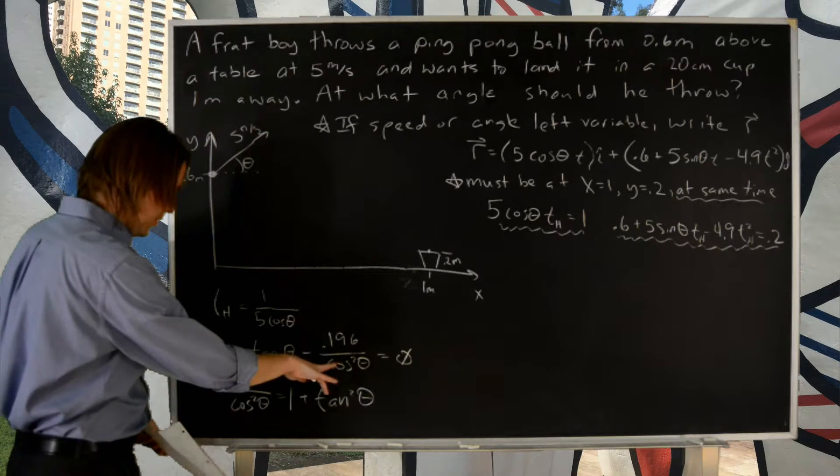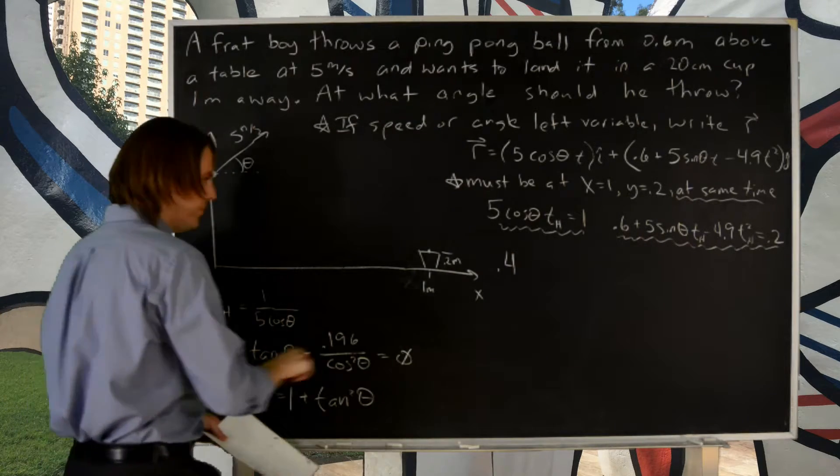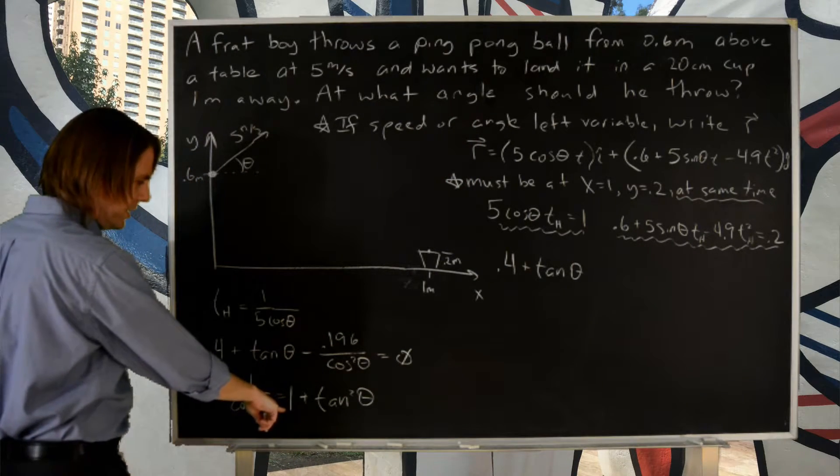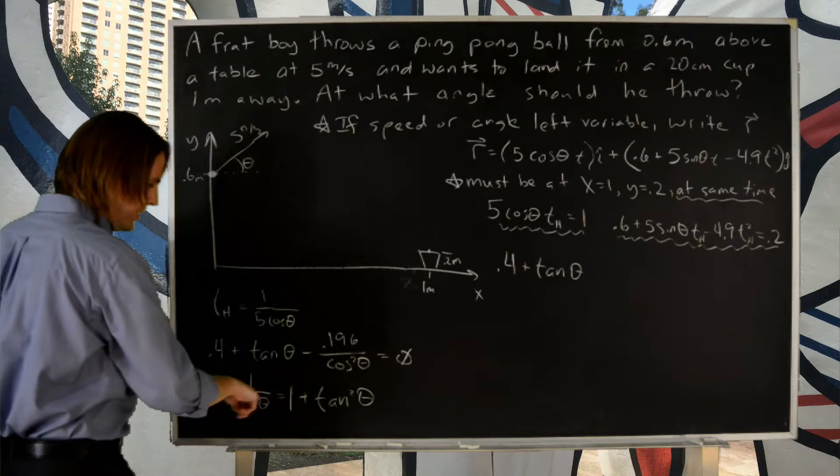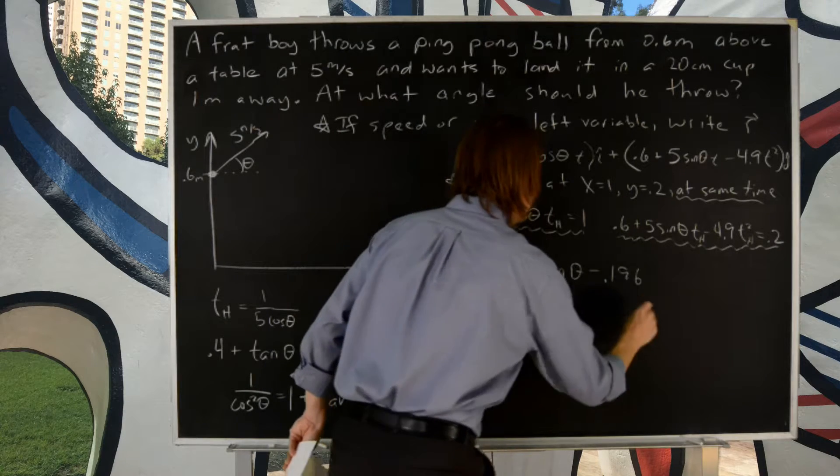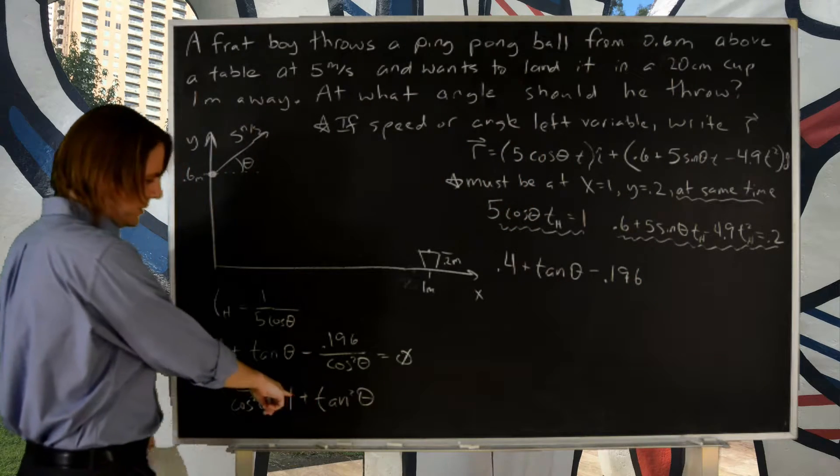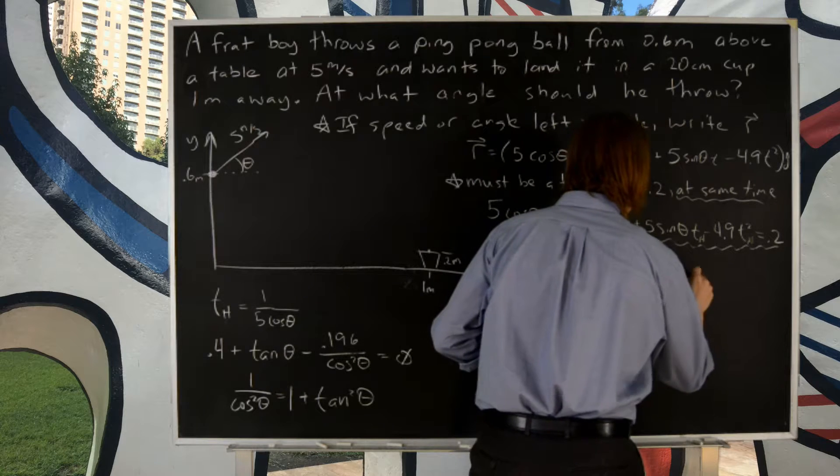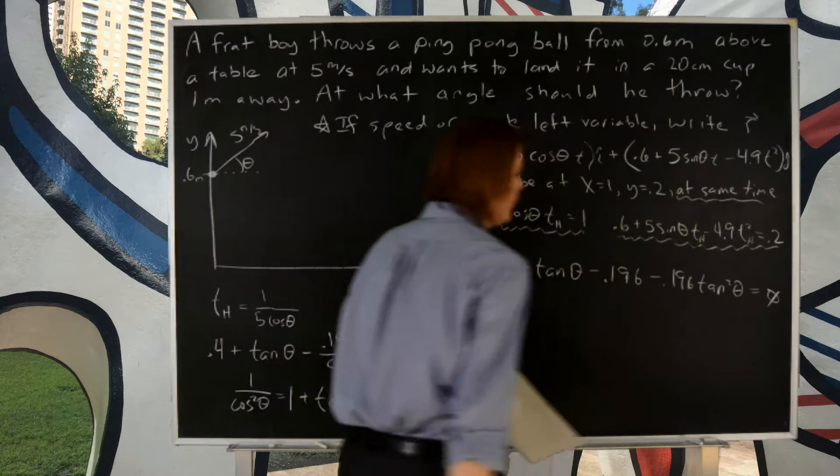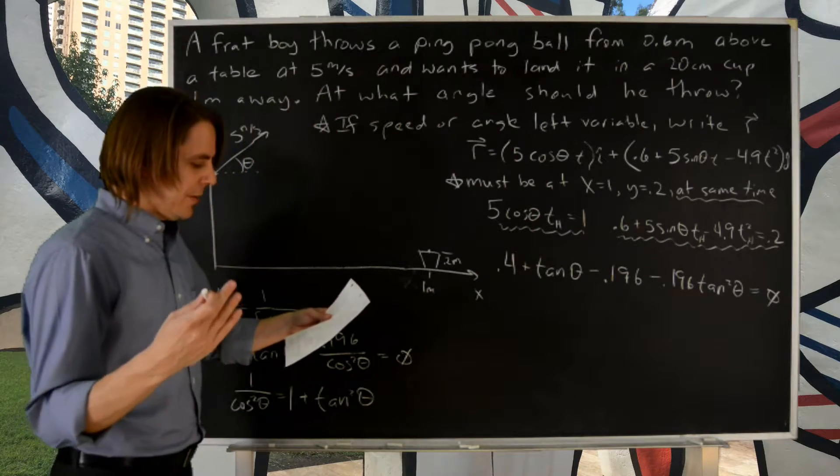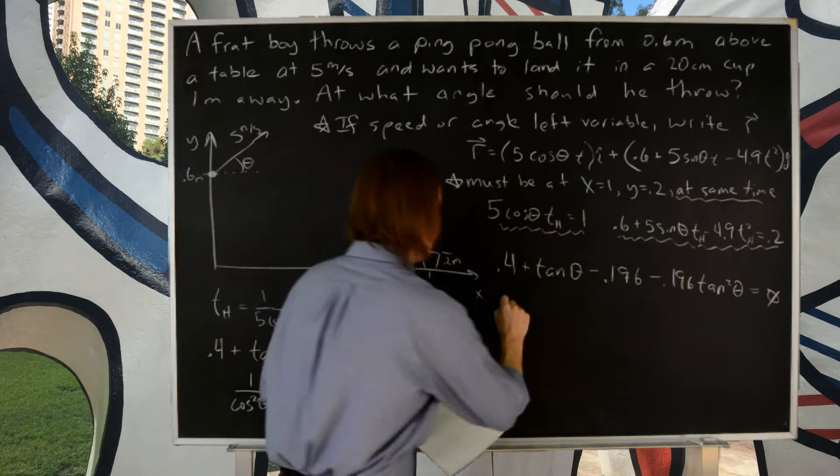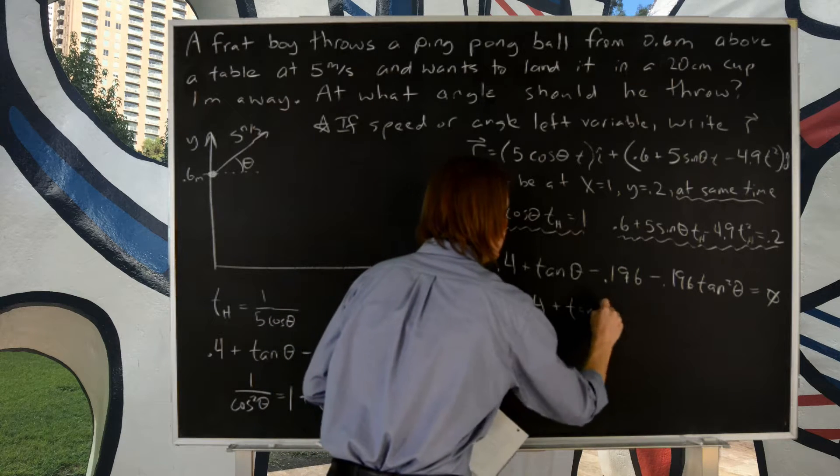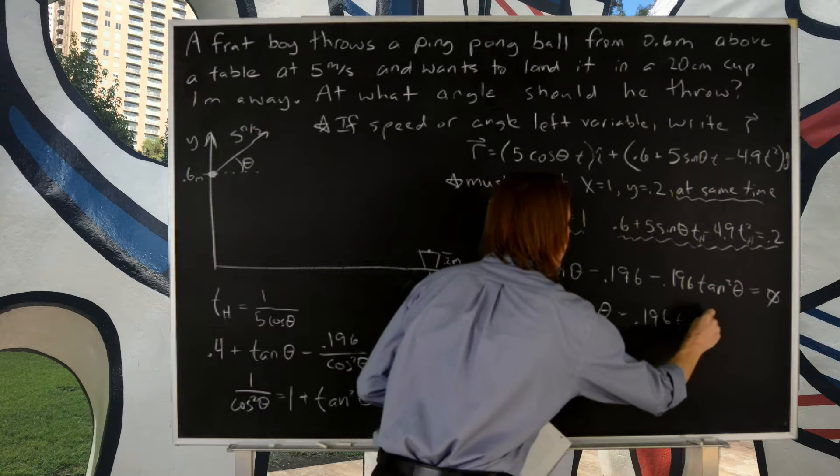We're going to apply that here. We're going to get 0.4, that's going to remain 0.4, that's going to become tangent theta, and this is going to become minus 0.196 times this. So minus 0.196, and then minus 0.196 tangent squared theta. Minus 0.196 tangent squared theta equals 0. And now you can see that's sort of in the form that you need. Now if you make this, well I'll run it one more time. If this becomes 0.204 and you combine the 0.4, you get 0.204 plus tangent theta minus 0.196 tangent squared theta, then use quadratic equation.